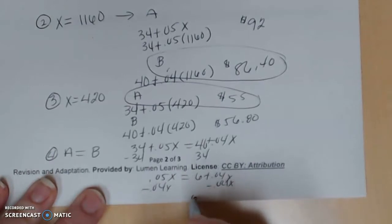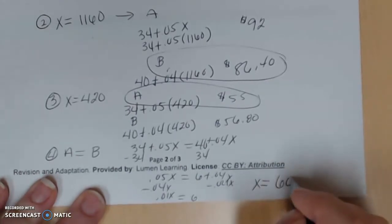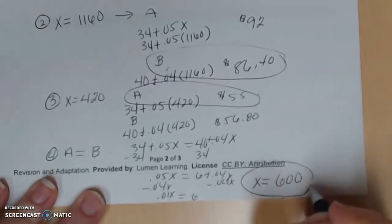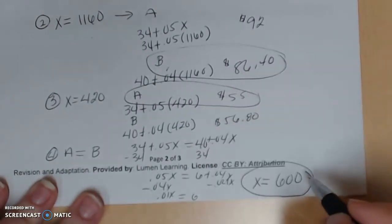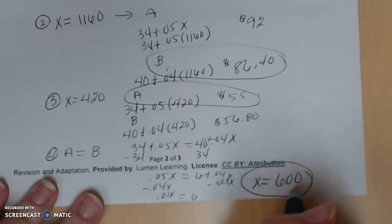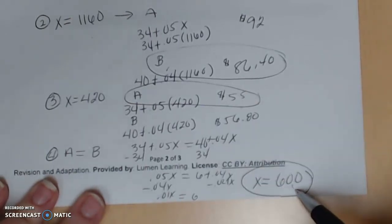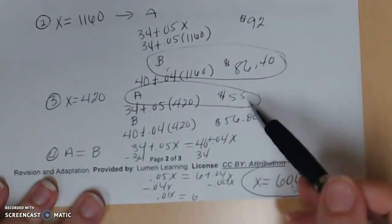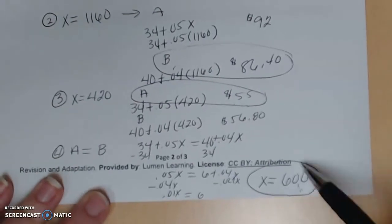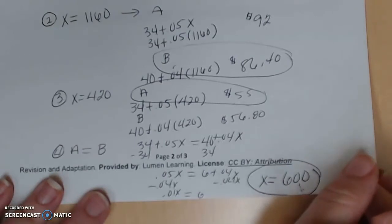I'm going to move over the 0.04. So I get, let's see, 6 equal to 0.01X. Divide them both by 0.01, and that gives me X to be 600. So at 600 minutes, we're going to have the same monthly statement. So what this shows me is, if I talk less than 600 minutes a month, I probably want to go with company A. If I talk more than 600 minutes, I probably want to go with company B. Everyone's kind of sure is going to have to take a stab at it because 600 is going to be the dividing line to where these two are equal.